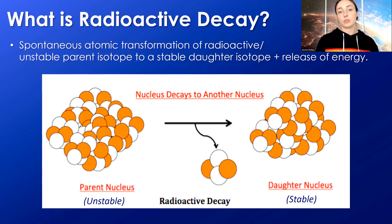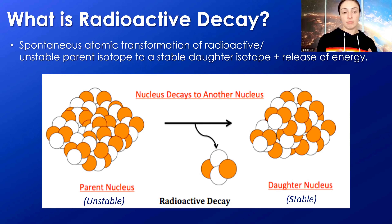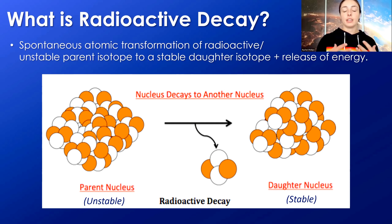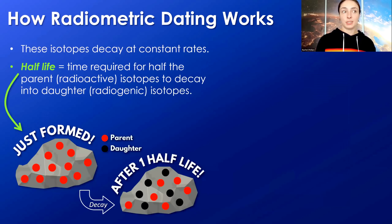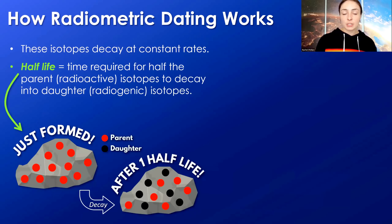Radioactive decay is the spontaneous atomic transformation of a radioactive or unstable parent isotope into a stable daughter product, plus the release of energy in the process. Because of the number of neutrons in the nucleus, these radioactive isotopes are just unstable, so over time they decay into a stable daughter isotope. Because radioactive isotopes decay at constant rates, we can define their half-lives — the time required for half the parent isotope to decay into the daughter or radiogenic isotope.